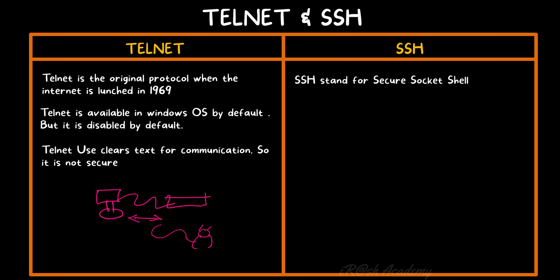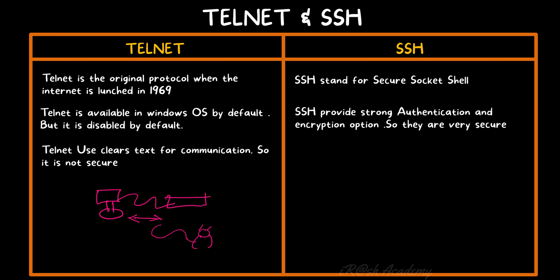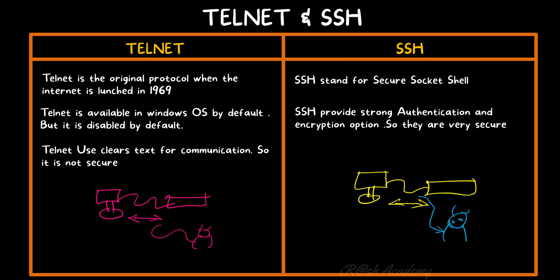SSH stands for Secure Shell. Unlike Telnet, it uses secure socket connectivity between devices, providing strong authentication and encryption. The communication between the PC and the network device is secured — encrypted into a format that no one outside can read. Even if a hacker tries to intercept the communication between the PC and the switch, they cannot read it because it is all encrypted. Only the two communicating devices can decrypt and understand the communication. That is why SSH is used in production networks and high-security environments.